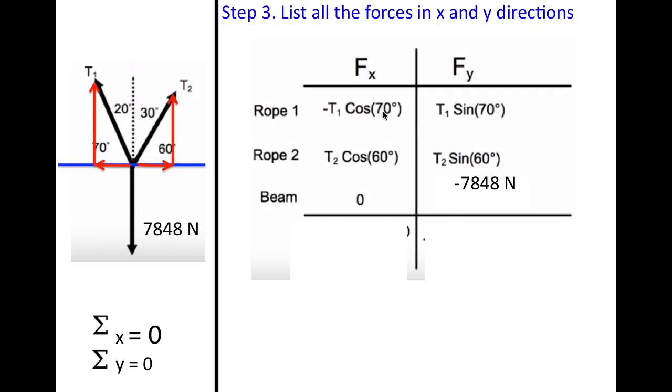So cosine of 70, put that into your calculators. Cosine of 60, add up these factors and set them to zero. So that would give us negative 0.342t1 plus 0.5t2 equals zero. And then let's go ahead and move this negative 0.342 over. And then we get 0.342 positive t1 equals 0.5t2. This will come in handy later.